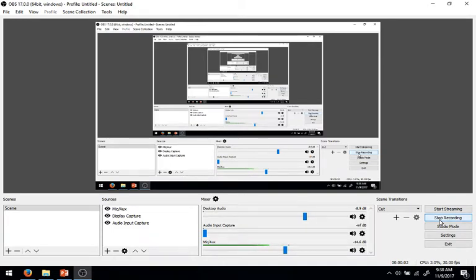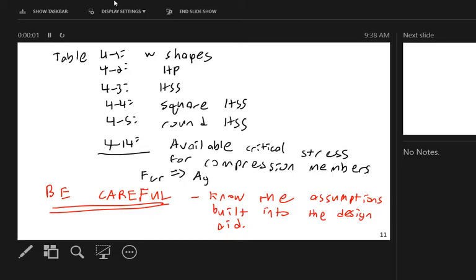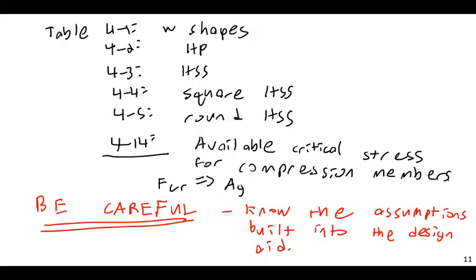Good morning. Here we are for part three of lecture 18 of CENG 4412 Steel and Concrete Design. I'm going to continue with the last topic I want to go over for steel column design: moment and axial force interaction.